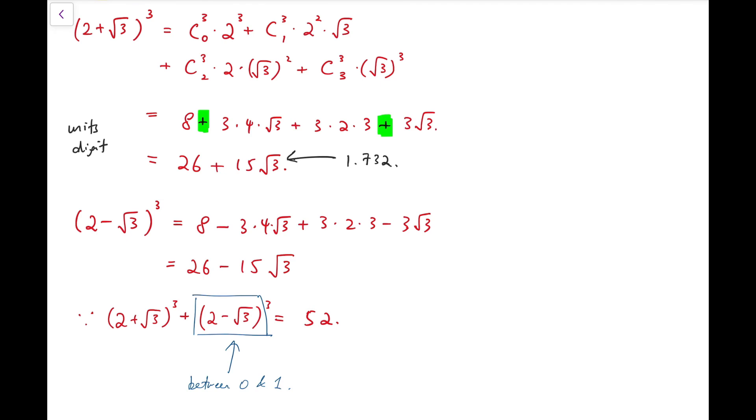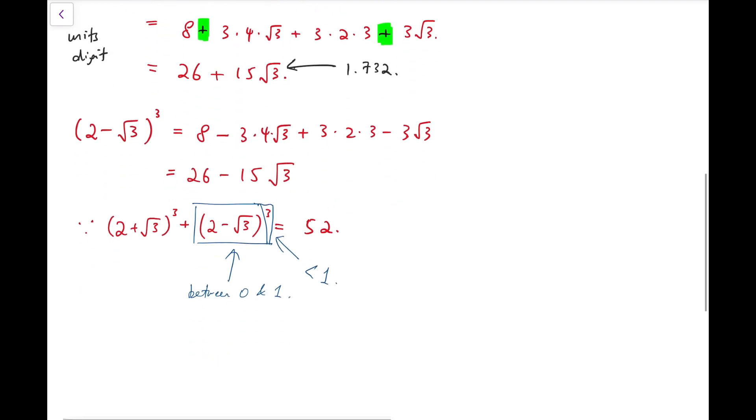So surely the entire number, now including the cube as well, must be smaller than 1. So we can say that (2 + √3)^3 is about 51 point something. So we can say that the units digit is just 1. So then we've solved a much easier version of our problem.